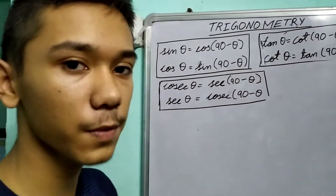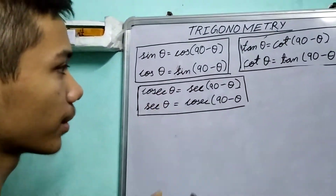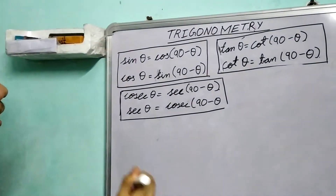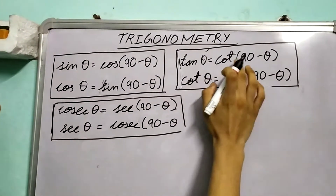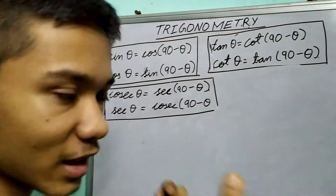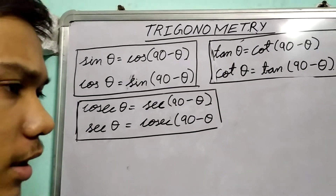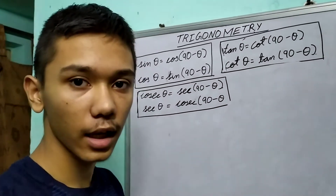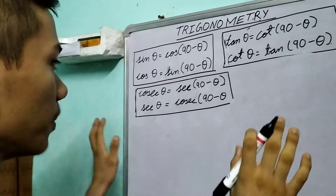Hi there. In the previous video we studied co-function properties of our trigonometric ratios. I proved these properties that sin theta is equal to cos of 90 minus theta, and tan of theta is equal to cot of 90 minus theta, and I gave the rest as homework. Now in this video we will see how to use these properties in examples and questions. So let us start with a really basic one.